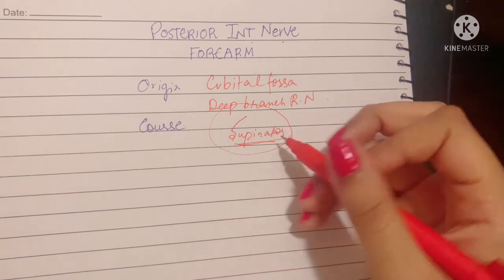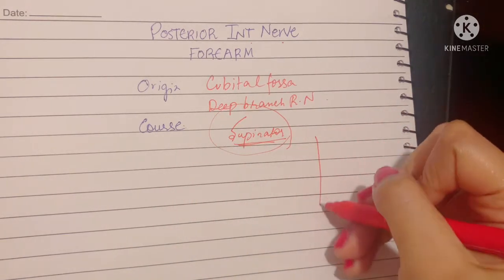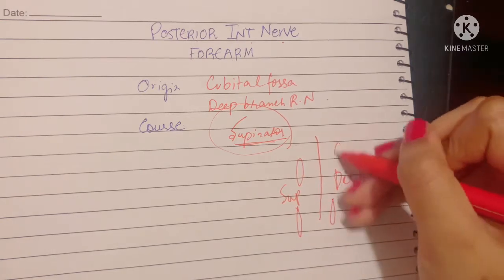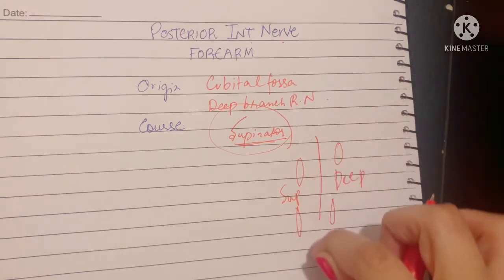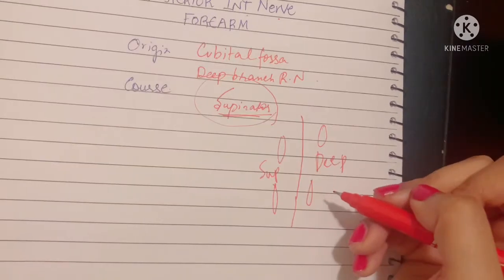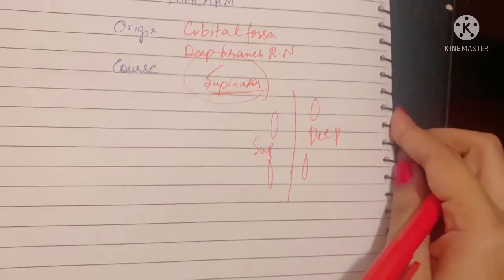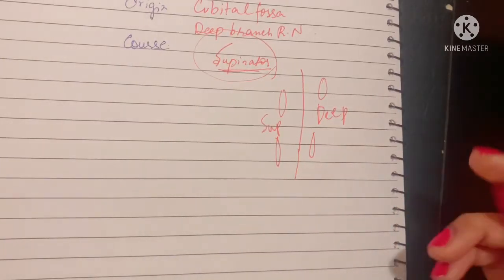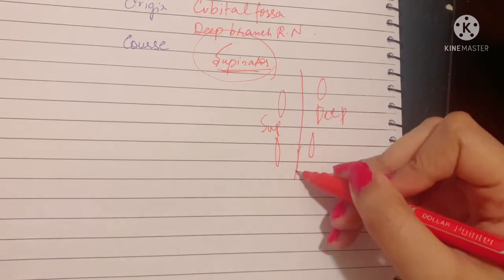In the back of the forearm, the nerve runs between the superficial and the deep muscles, accompanied by the posterior interosseous artery. If you remember, the posterior interosseous artery was a branch of the common interosseous artery, which was a branch of the ulnar artery.